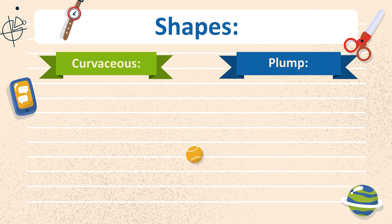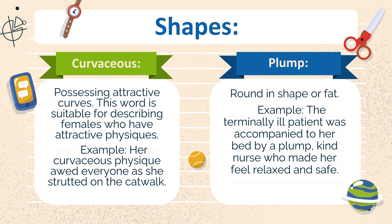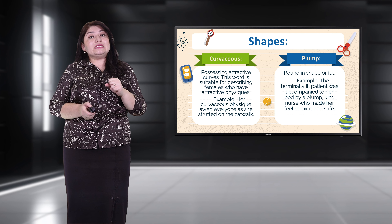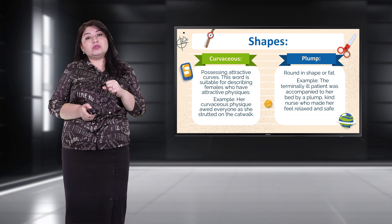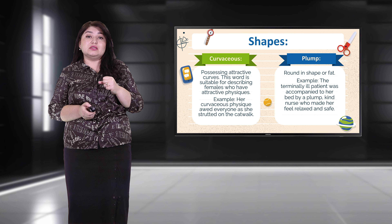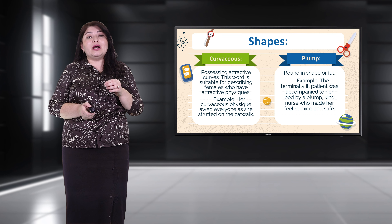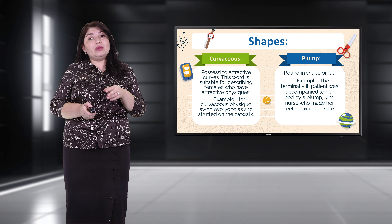Shapes: another area in which human beings differ is the shape of their bodies. Shape adjectives help to create a clear visual image of the physical appearance of people. Some shape adjectives are more suitable to a particular gender. For example, 'curvy' — possessing attractive curves. This word is suitable for describing females who have an attractive physique. Example: 'Her curvy physique wowed everyone as she strutted on the catwalk.' 'Plump' — round in shape or fat. Example: 'The terminally ill patient was accompanied to her bed by a plump, kind nurse.'